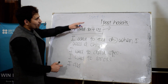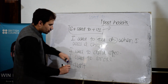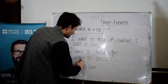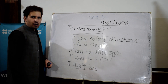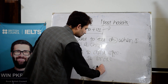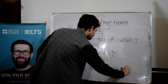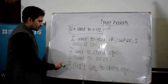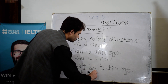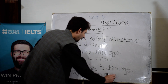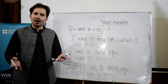For the negative, because we are talking about the past, we use 'did not.' The structure becomes: I did not use to. After 'did not' we always use the first form of the verb. For example: I did not use to drink coffee, or I did not use to smoke when I was at college.